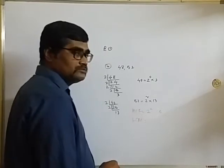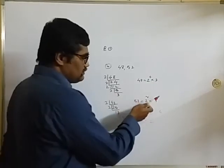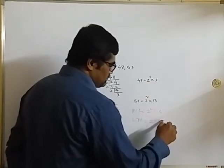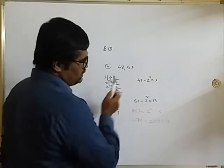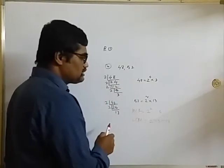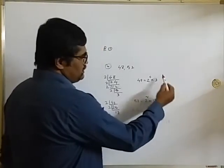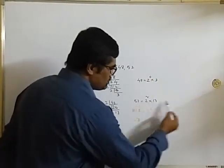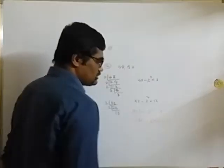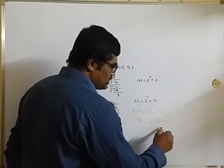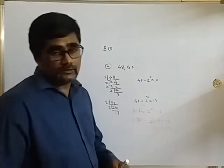For LCM, take all the factors: 2, 3, and 13. Once you have written a factor, you need not write it again. For 2: highest power between 4 and 2 is 4. For 3: present in 48 with power 1, not in 52 so power 0 — highest is 1. For 13: power 1. So LCM = 2 to the power 4 into 3 into 13. I leave the multiplication to you.